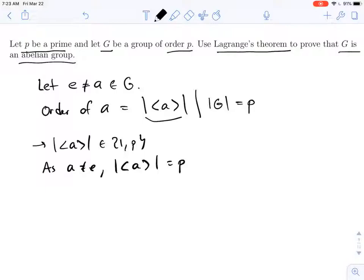But G only has p elements, so this subgroup must equal all of the elements of G. Therefore, G is a cyclic group.